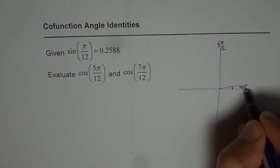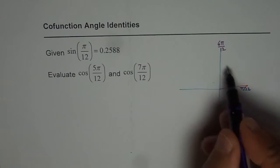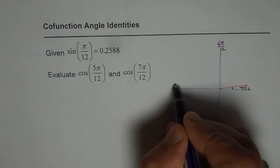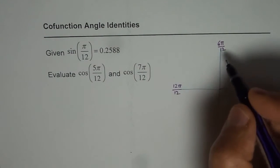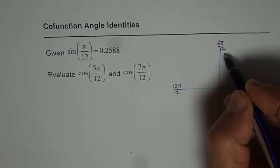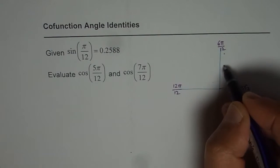If this is π/12, right, so π divided into this is 12π/12. So that is π. So 5π/12 is less than, so kind of this position.